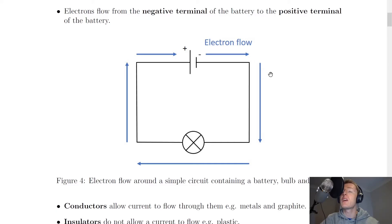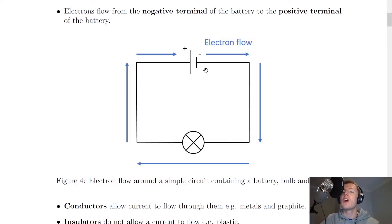If we look at this picture of a simple circuit diagram, you'll see we have a battery — actually known as a cell because there's only one — and some wires connected to a bulb. The electrons travel from the negative terminal of the battery, down through the bulb, and back up to the positive terminal. This is because electrons have a negative charge, so they are repelled away from the negative terminal and attracted towards the positive terminal.